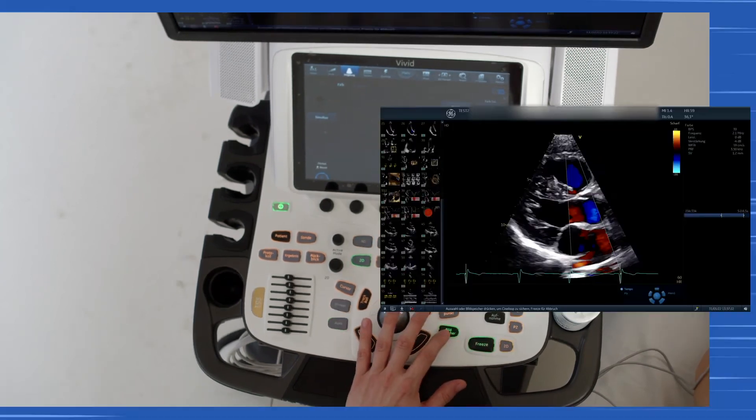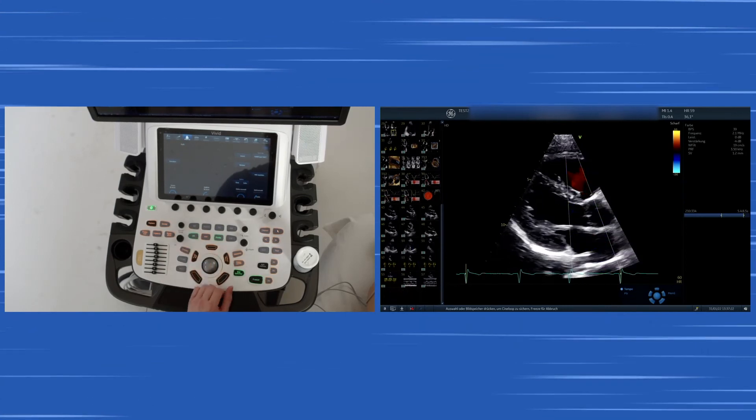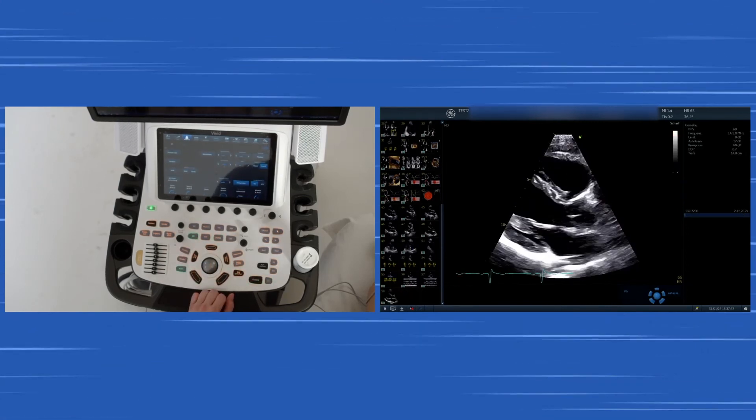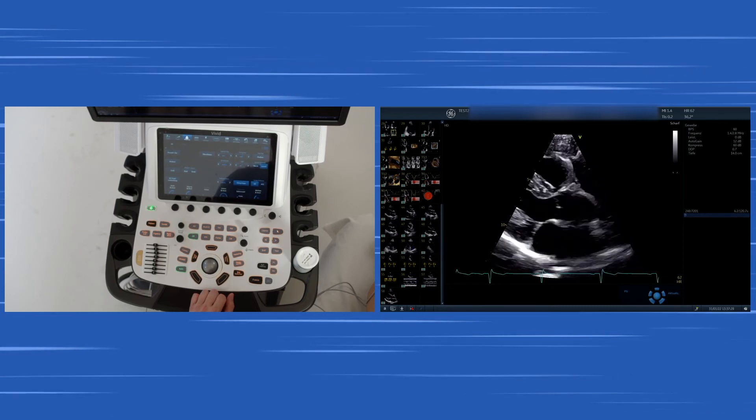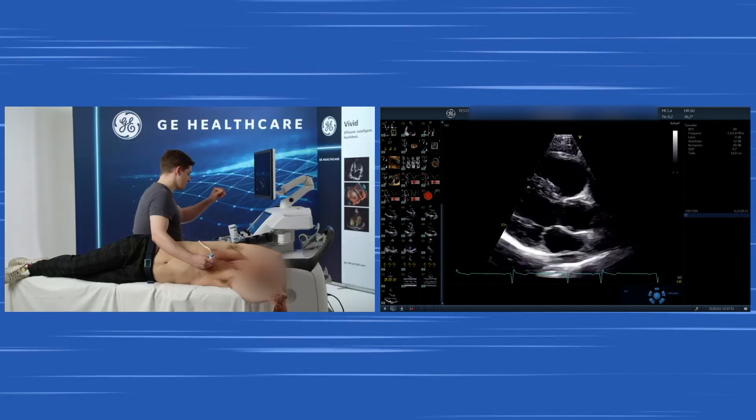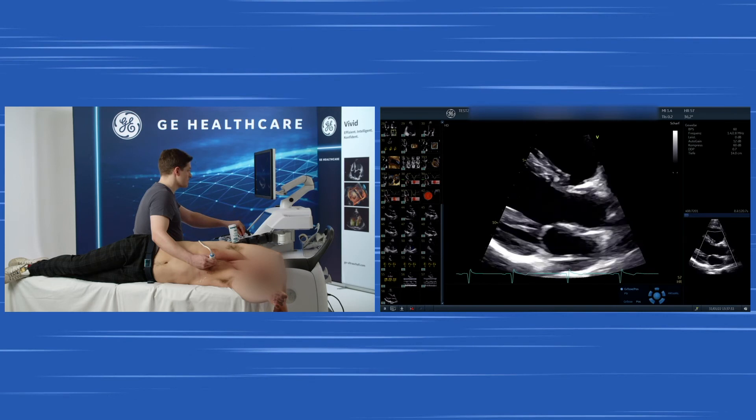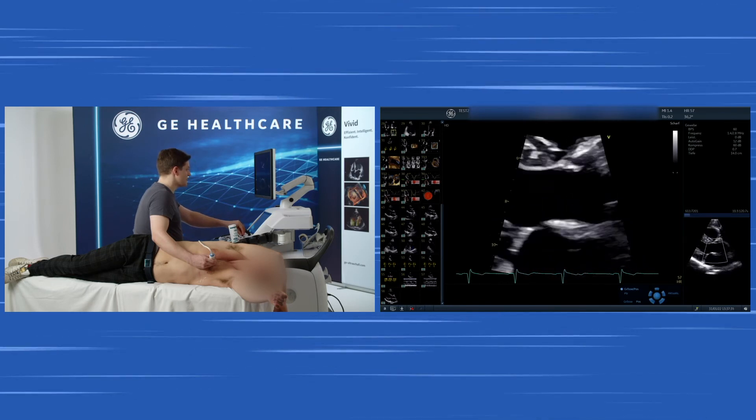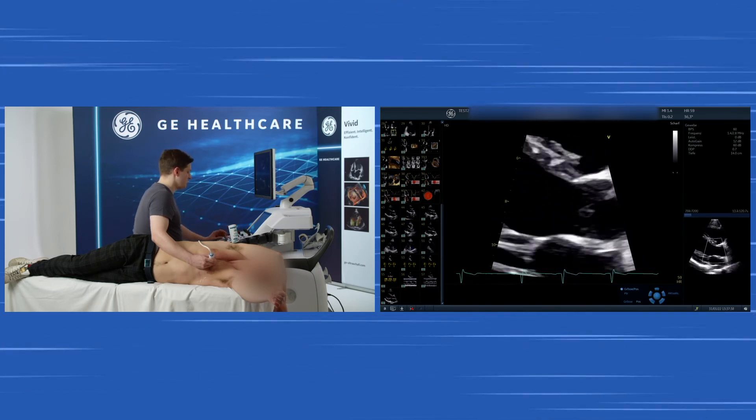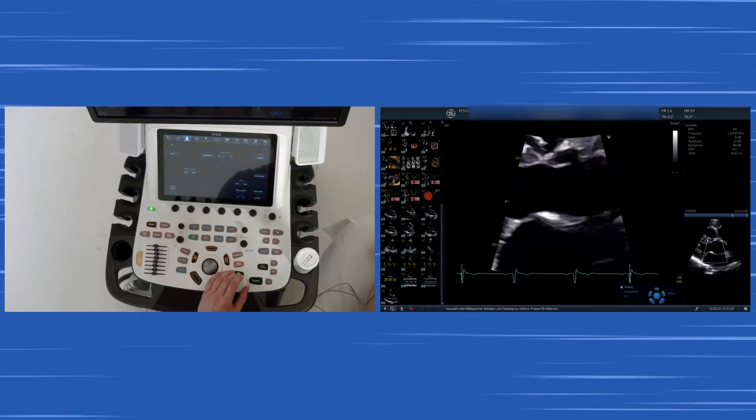Also save the images and continuing with the parasternal long axis view, you also can zoom in towards the aortic valve to visualize the valve in great detail. What you can see is that there is no anatomical variant, at least not in the parasternal long axis present.